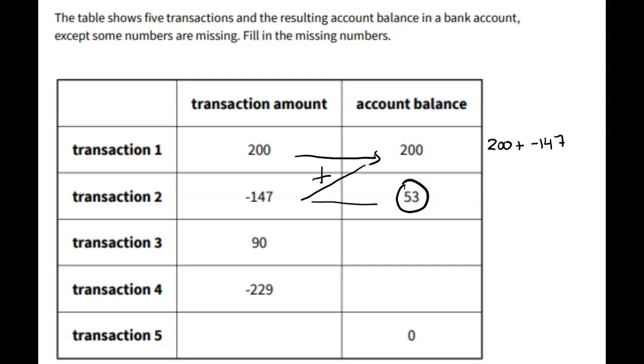In the next problem, you have to identify which steps include an error using a hotspot. You will see the completed table and you will have to identify which transaction shows the wrong account balance. Good luck!